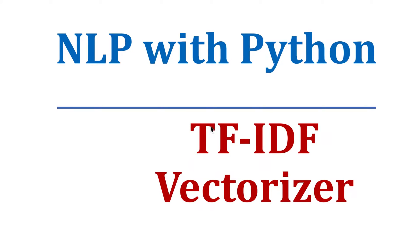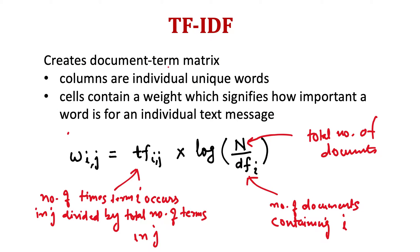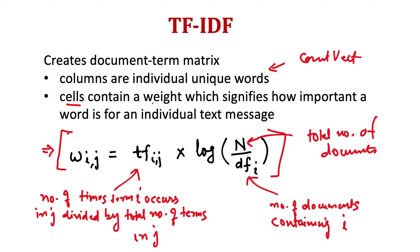In the previous two videos we have seen count vectorizer and n-grams vectorizer. In this video we will see another vectorization technique called TF-IDF. It also creates a document term matrix similar to count vectorizer and n-grams, where the columns are individual unique words. In n-grams, columns were all combinations of adjacent words of size n, but here it will be unique words same as count vectorizer. Cells instead of containing the frequency of each word in a particular document will now contain a different weight calculated using a formula.